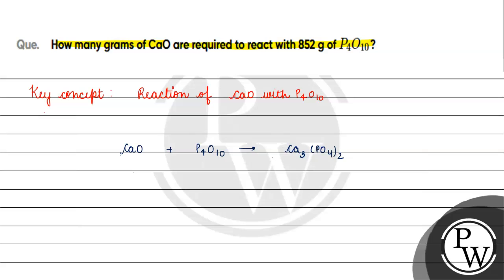If we want to balance this reaction, we will basically have 2 because we balanced the phosphorus first. Now calcium 6, now calcium balanced.